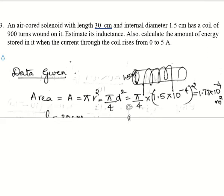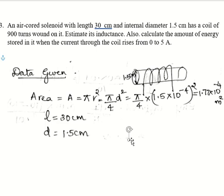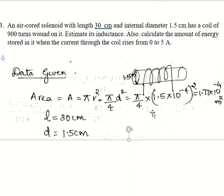Given data: length l = 30 centimeter = 0.30 m. Internal diameter d = 1.5 centimeter. Cross-sectional area A = πd²/4 = π × (1.5 × 10⁻²)² / 4 = 1.77 × 10⁻⁴ meter squared.